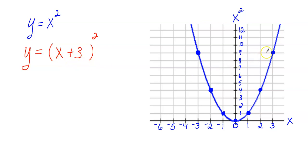Let's go ahead and move each point left 3 units. I'll start here and move this point left 3. You should notice that the x values are changing — here the x value is 3, and now the x value is 0. Let's move this point left 3 units. The x value here was 2, and the new x value is negative 1.